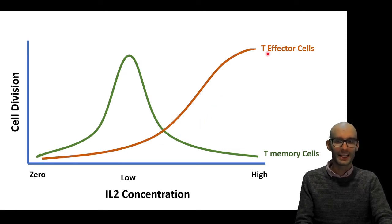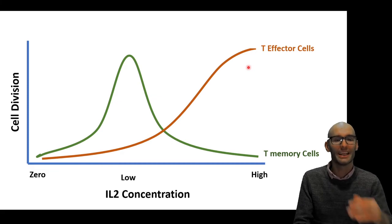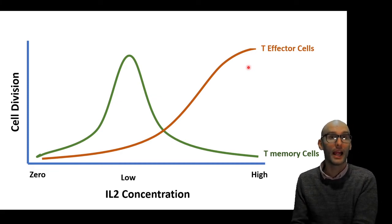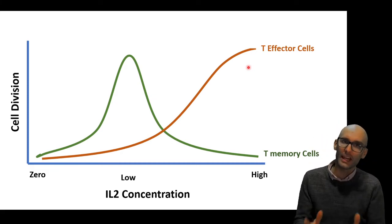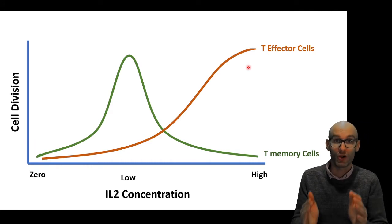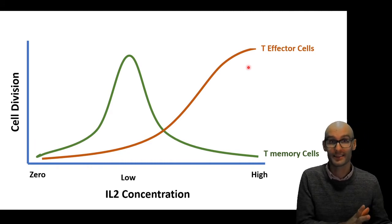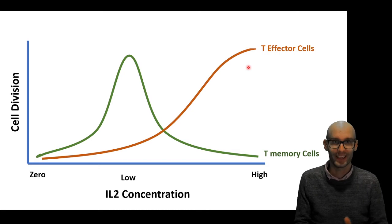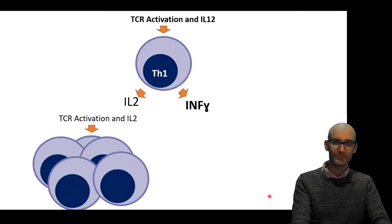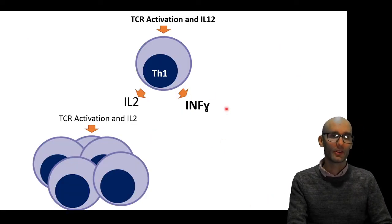But as the concentration increases, as we get to a high concentration, we get way more proliferation in the effector cells. A high IL-2 concentration means we are undergoing a massive infection right now, so we need effector cells. We need lots of effector cells. Now let's have a look at interferon gamma.